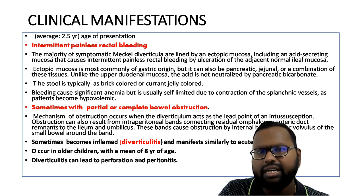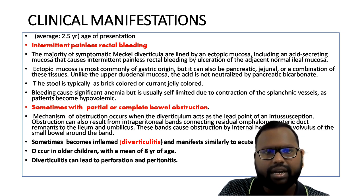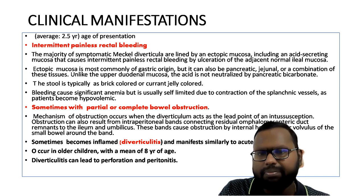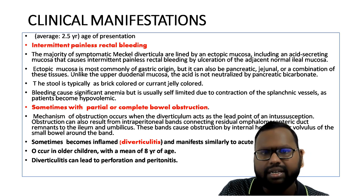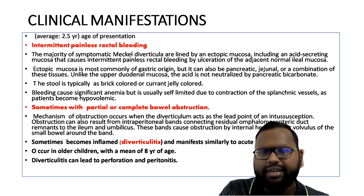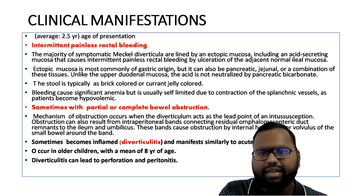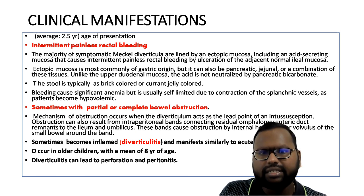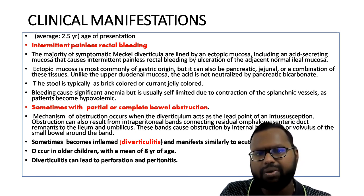Ectopic mucosa is mostly of gastric origin but can also be pancreatic, duodenal, or a combination of these tissue types. Sometimes it presents with partial or complete bowel obstruction. The mechanism is that the diverticulum acts as a lead point of intussusception. It can also cause obstruction due to intraperitoneal bands connecting the residual omphalomesenteric duct to the ileum and umbilicus — these bands cause obstruction by internal herniation or volvulus of the small bowel. Sometimes it becomes inflamed, which we call diverticulitis, and diverticulitis is a close differential of acute appendicitis. Diverticulitis can also lead to perforation and peritonitis.